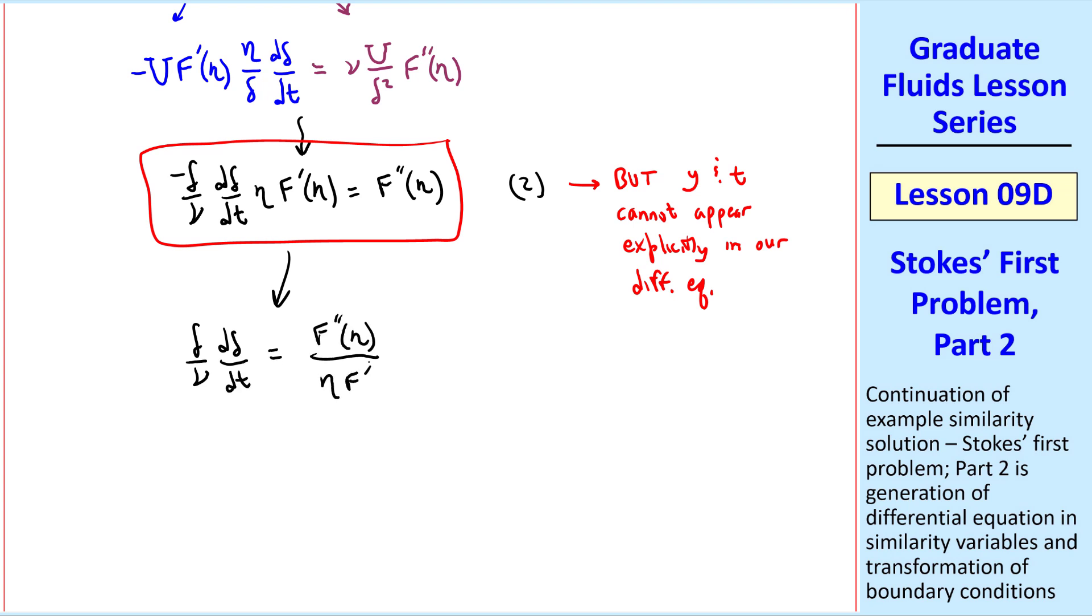All the terms with deltas and t's on the left side, and all the terms with eta and capital F on the right side, remembering that delta is a function of time, and F is a function of eta. So the left-hand side is a function of time only, and the right-hand side is a function of eta only.